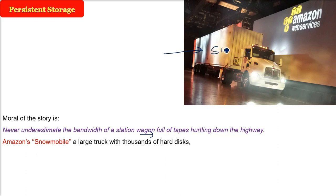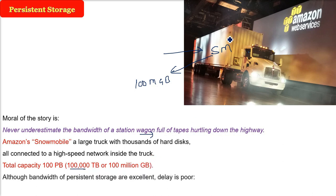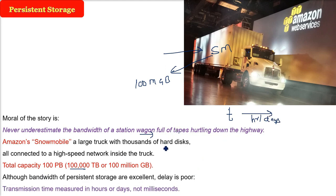Amazon Snowmobile is a real example — a large truck with thousands of hard disks, all connected through a high-speed network inside the truck. Its total capacity is 100 petabytes, that is 10^5 terabytes or 100 million GB. The bandwidth and cost effectiveness of persistent storage are excellent. The only disadvantage is poor delay — transmission time is computed in hours and days, not milliseconds or microseconds like actual transmission media.